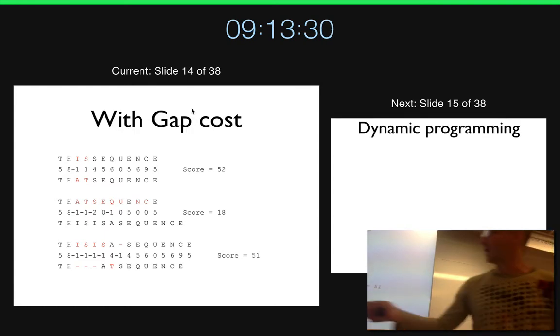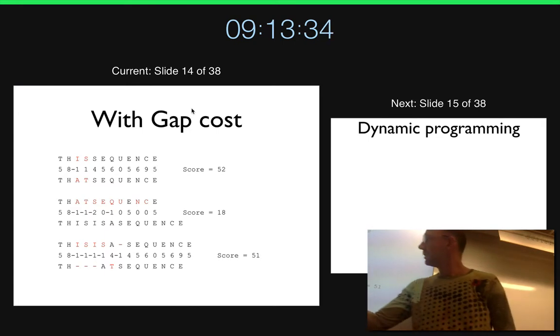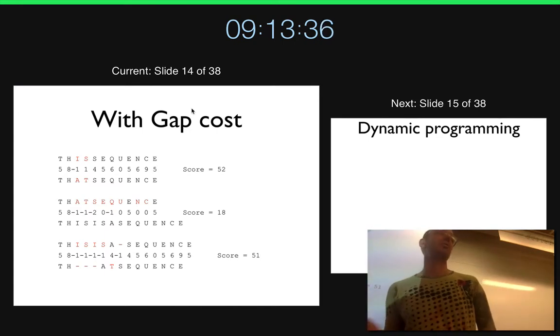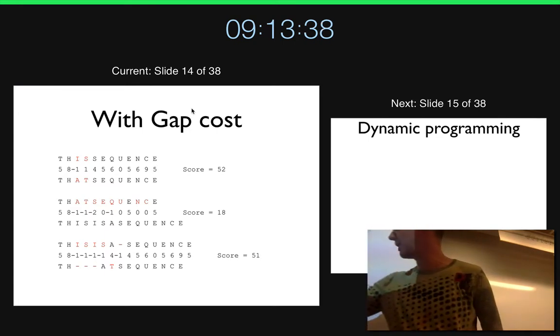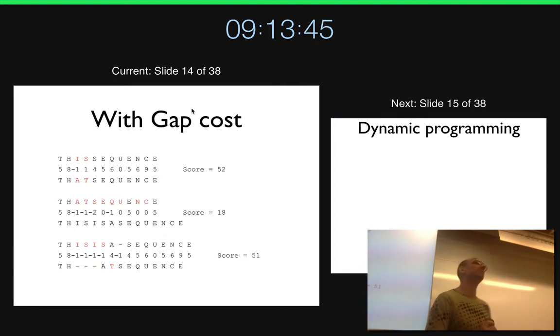And then you can have a gap cost here. Often you have some cost for the gap. Often the first gap costs more and then the rest of the gaps are cheaper. So you should probably have minus 10 there and then one with the others, and minus 10 here. The score here would be something like 30 instead, but it's still higher than 18.